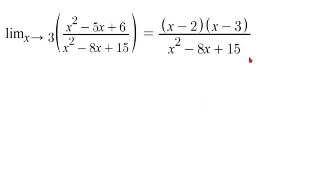Now, thinking ahead, the bottom will be factored out as x minus 3 times x minus 5. Since we'll have x minus 3 on the top and x minus 3 on the bottom, those two will cancel, which means we'll take the x minus 2 from the top and x minus 5 from the bottom.